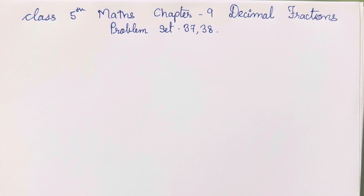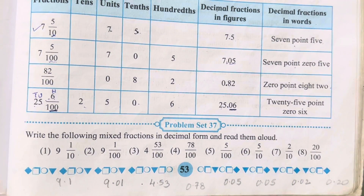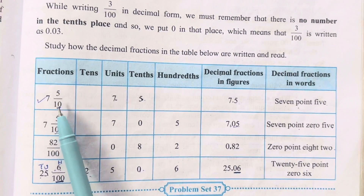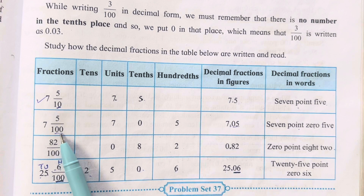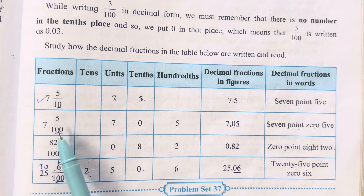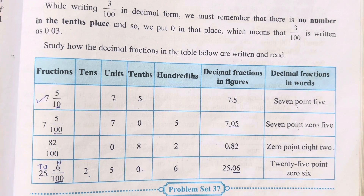Hello everyone, welcome back to my channel. Today we will be studying class 5th math chapter number 9, decimal fraction, problem set number 37 and 38, which we are going to complete in today's video. Other practice sets we have already completed, and I have given the explanation of how to write the place value of fractions with denominators 10 and 100. Today we are going to learn in detail how to write fractions in decimal form when the denominator is 100.